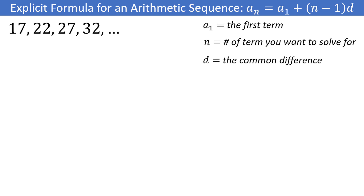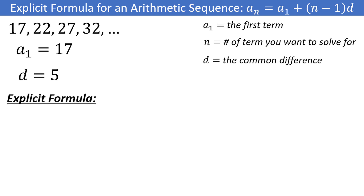Consider this arithmetic sequence. Let's see if we can write the explicit form for this sequence. All we need to do is identify the first term, a sub 1, and the common difference, d. The first term is 17, so a sub 1 is equal to 17. The common difference between terms is 5, so d is equal to 5. Plugging into the formula, we have a sub n is equal to 17 plus (n minus 1) times 5.